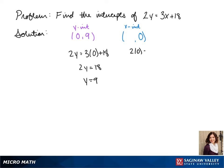For our x-intercept, that's when our y value is 0, so we plug in a 0 for our y. We get 2 times 0 equals 3x plus 18, so 2 times 0 is 0.